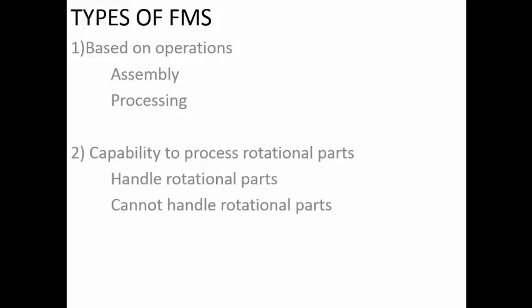Another classification of flexible manufacturing systems is based on the capability to process rotational parts. A rotational part is one produced usually by using a lathe or handling cylindrical components. This is very important because a conventional flat surface like a robotic gripper or a vice cannot grip a cylindrical component, so additional provisions are required in the material handling equipment to manipulate or hold cylindrical surfaces.